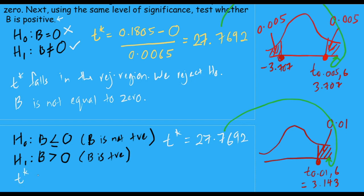So we could make a conclusion. So T star falls in the rejection region. We reject H null. Reject this. And so we accept this. That means B is positive. B is positive. And there you go.